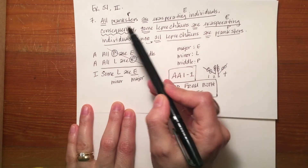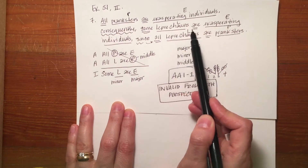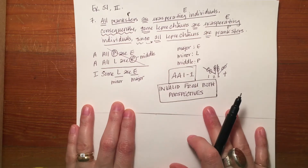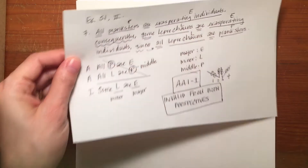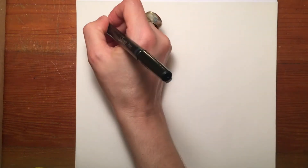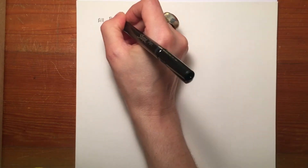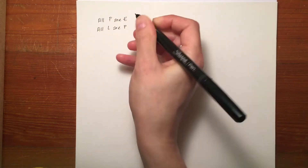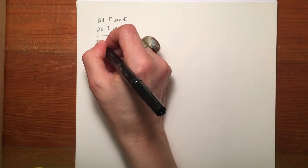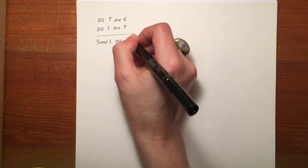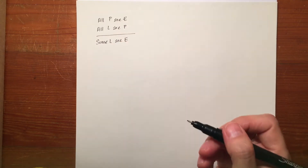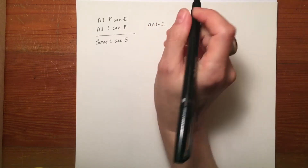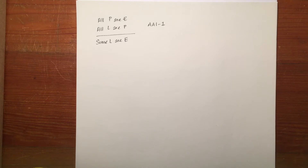If I had 'all pranksters are exasperating individuals, consequently some leprechauns are exasperating individuals, since all leprechauns are pranksters,' and I put it into correct standard form, I would get: All P are E, All L are P, therefore Some L are E. I know that the mood and figure is AAI-1, and we can use that later to check our work.